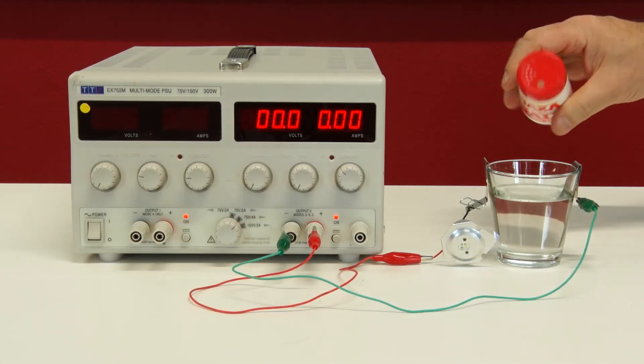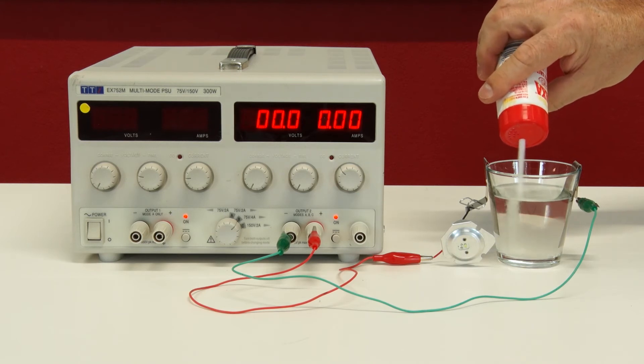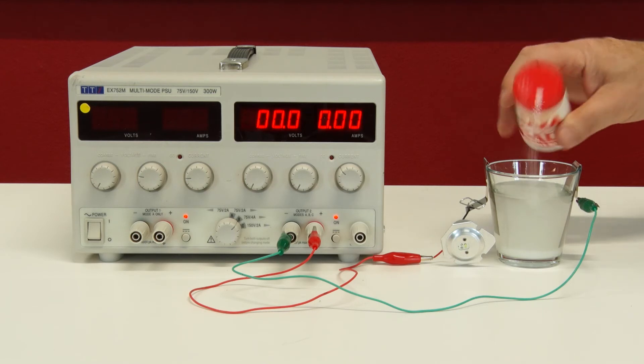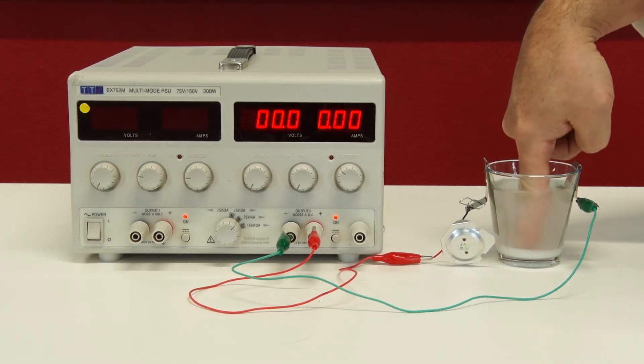I'm now going to add some salt to the pond water, maybe around three or four grams, which corresponds to the concentration of seawater. I want the salt to dissolve, so I'll mix it up.